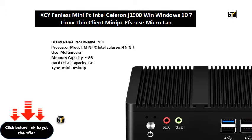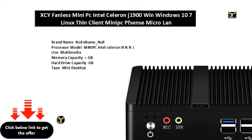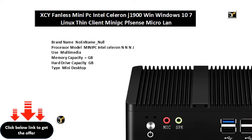Wi-Fi: 802.11 B/G/N, mini PCIe half height. Processor graphics: Intel HD Graphics. USB ports: USB 3.0 x2, USB 2.0 x2. Memory capacity: 2GB, 4GB, 6GB, 8GB optional. Hard drive capacity: from GB to TB optional. Dimensions in mm. Working voltage: DC. PC box material: aluminum alloy. Construction: fanless passive cooling. Warranty: 12 months.